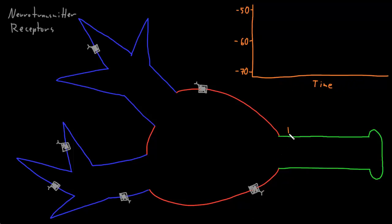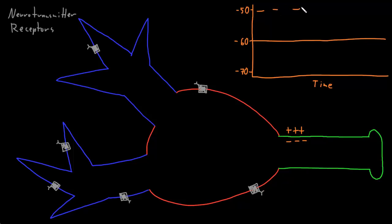Recall that a resting neuron without inputs has a layer of positively charged ions on the outside of the membrane, and a layer of negatively charged ions on the inside of the membrane. The strength of that charge separation without inputs may vary between neurons, but it's often around negative 60 millivolts for the resting potential. Neurons have a threshold potential that's often around negative 50 millivolts, so that if the membrane potential at the trigger zone passes the threshold potential, an action potential may be fired down the axon.